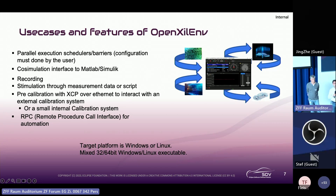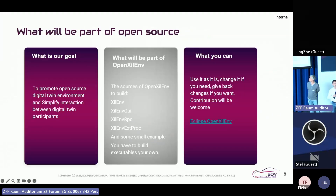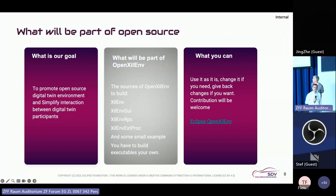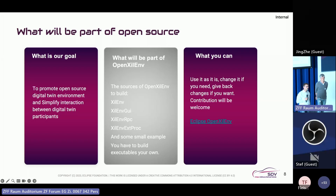Target platform is Windows or Linux, with mixed 32-bit and 64-bit support. Our goal is of course to promote open source, especially in the digital twin environment and software-defined vehicle areas, where a lot of collaboration between multiple stakeholders, parties, and companies is required. To have an overall system developed in such an SDV context, it is crucial to have common standards so that collaboration can work properly.